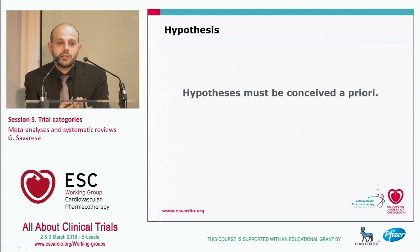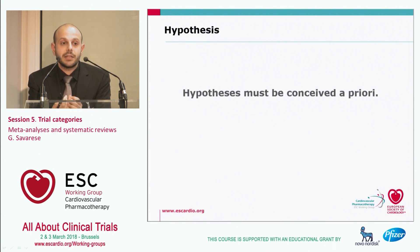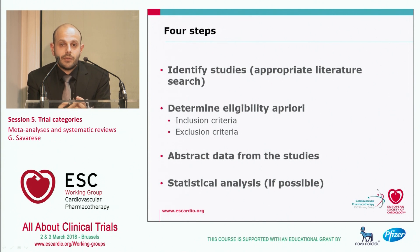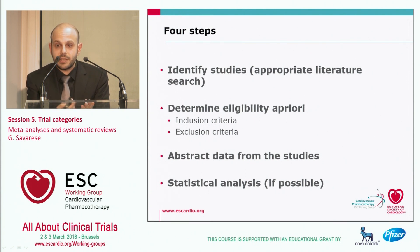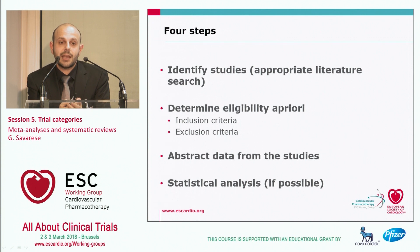When planning to perform a systematic review or a meta-analysis, there are important aspects to consider. First, the hypothesis must be conceived a priori, as is also common with RCTs. There are four key steps: identify the studies to include, define inclusion and exclusion criteria, abstract data from the selected studies, and finally, if possible, perform statistical analysis — which is the difference between a systematic review and a meta-analysis.